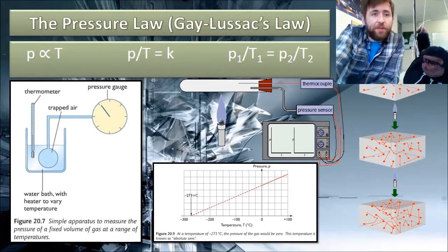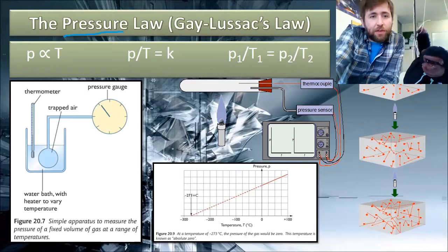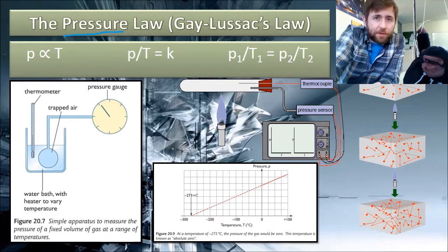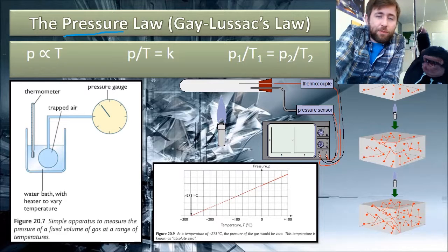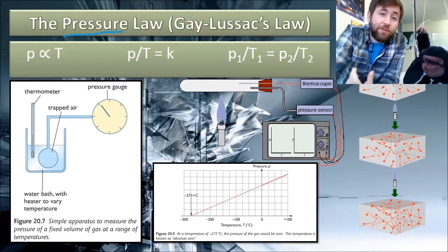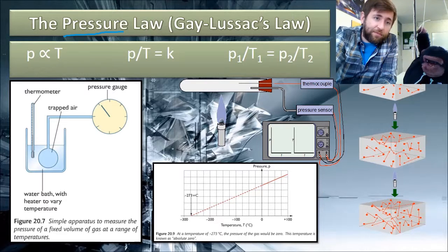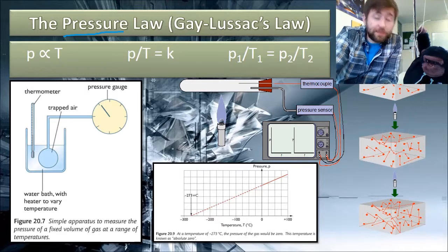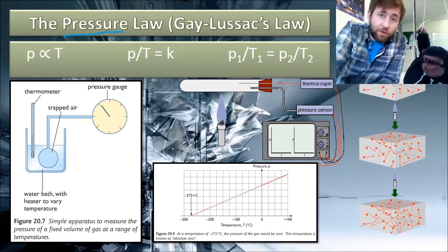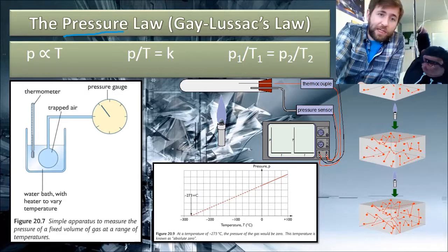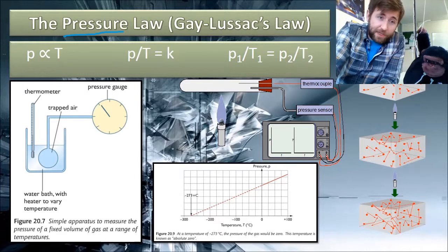The last of our three gas laws then is called the pressure law, or Gay-Lussac's law, but most of the time we just refer to it as the pressure law. This is pressure proportional to temperature, and this would be for a fixed volume. So this time you have to fix the volume of the gas. And this tends to be done with a spherical flask with a sidearm and a way of measuring the temperature and keeping the air trapped in there. It's got to be a fixed mass, don't forget. Fixed mass, fixed volume this time, and linking it to a pressure gauge.